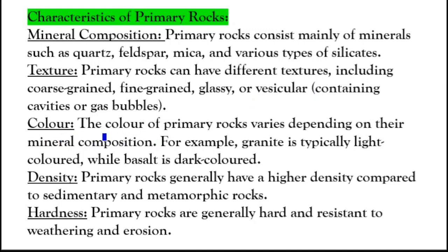The color of primary rocks varies depending on their mineral composition. For example, granite is typically light-colored while basalt is dark-colored. Density: primary rocks generally have a higher density compared to sedimentary and metamorphic rocks. Hardness: primary rocks are generally hard and resistant to weathering and erosion.